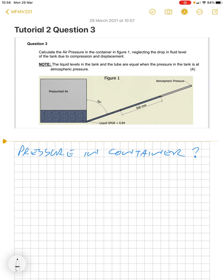The question is: calculate the air pressure in the container in figure 1, neglecting the drop in fluid level of the tank due to compression and displacement. Note: the liquid levels in the tank and the tube are equal when the pressure in the tank is at atmospheric pressure.